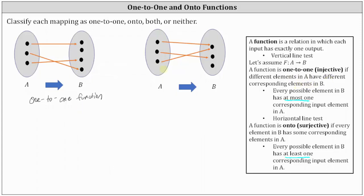Looking at our last mapping, we again have a function. The first element in B has two corresponding inputs, the second has one corresponding input, and the third has zero corresponding inputs. This is not a one-to-one function because the element with two corresponding inputs does not meet the requirement of at most one. It is also not onto because the third element has zero corresponding inputs, which does not meet the requirement of at least one. Therefore, this last mapping is a function, but it is neither one-to-one nor onto.